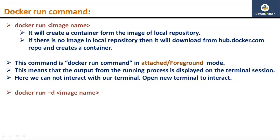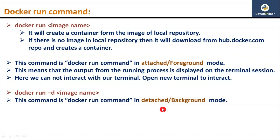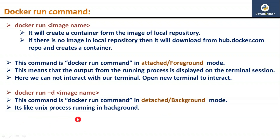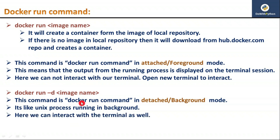This is called detached mode or background mode of the docker run command. It's like running a Unix process in the background — in Unix command line, if you add an '&' symbol at the end of a command, the process runs in background. The same concept applies with 'docker run -d image_name': it creates a container that runs in the background.